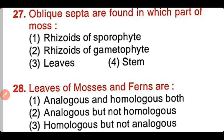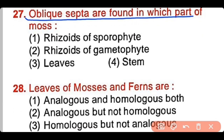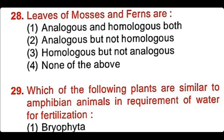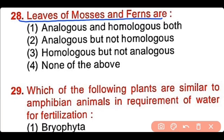Question number 27: The oblique septa are found in which part of the moss plant? Rhizoids of sporophyte, rhizoids of gametophyte, leaves, or stem. The correct answer is option 2. Oblique septa are found in the rhizoids of the gametophyte and separate different parts of the gametophyte. Question number 28: The leaves of mosses and ferns are analogous and homologous, analogous but not homologous, or none of the above. The correct answer is option 2 — the leaves of mosses and ferns are analogous because they have similar function, but they are not homologous.